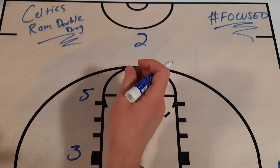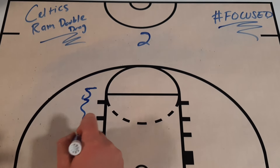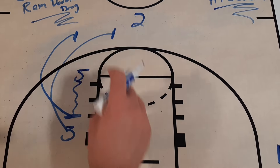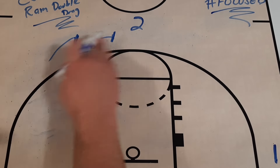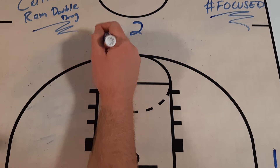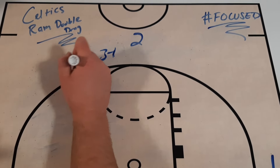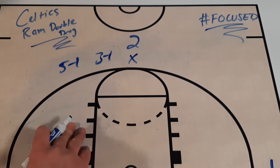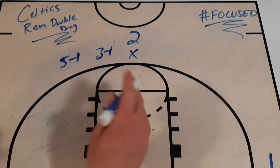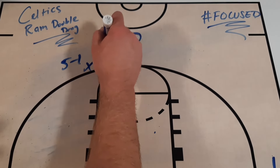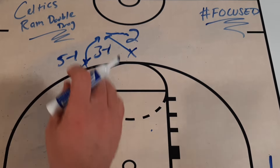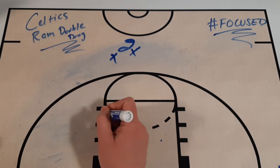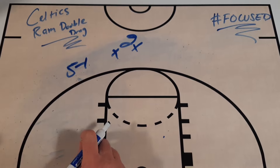Here we are with the Celtics ram double drag action again. Kata comes down and sets the screen for Hauser, who comes up and sets the first ball screen, followed by Kata setting the second screen. But the Magic look at this action and say — here's Hauser and here's Kata setting the screen. We have allowed you to dictate what happens: Brown has come off the screens and shot it; he has rejected and attacked the paint. This time when you go that way, we're going to blitz you and force you to make a difficult decision.